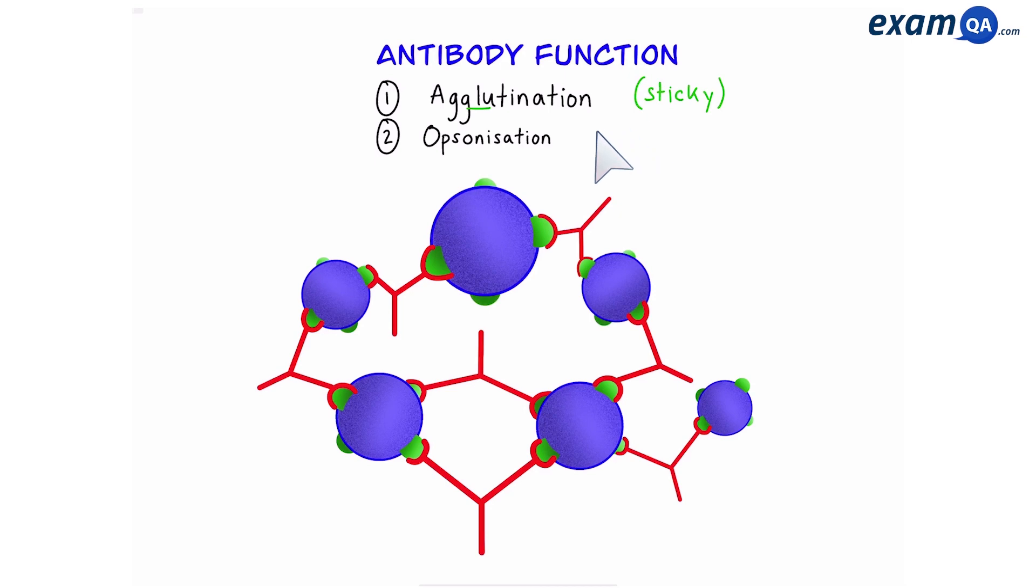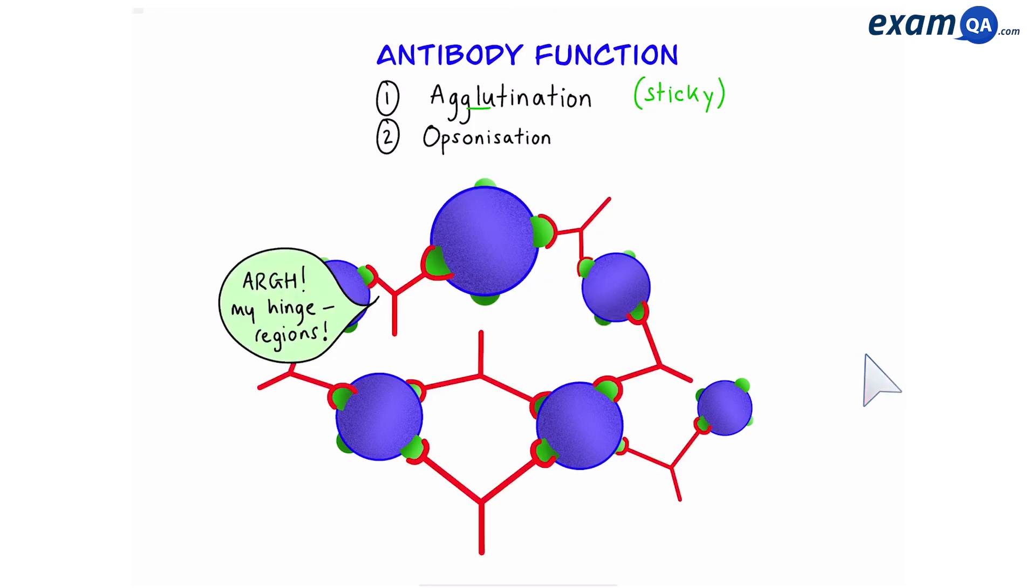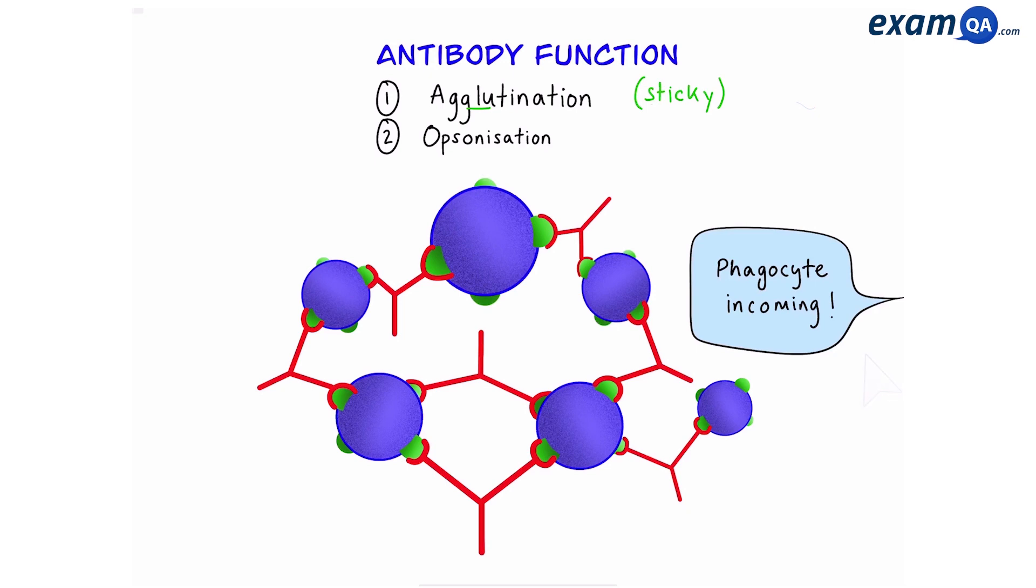The next function is called opsonization. Once the antibodies have bonded to the pathogens, they now need to call the white blood cells to come and eat them up. So let's see how this plays out.